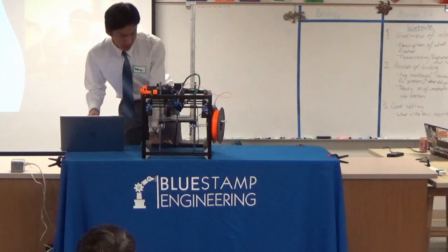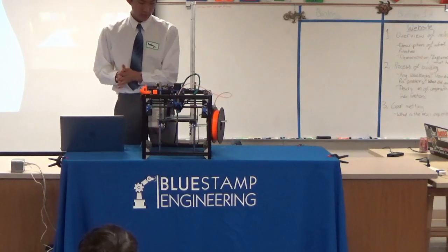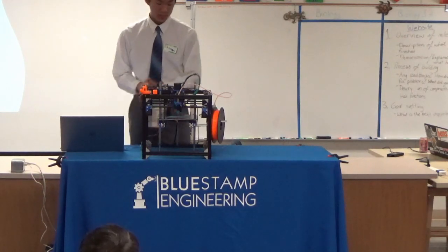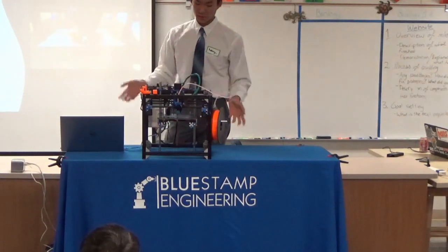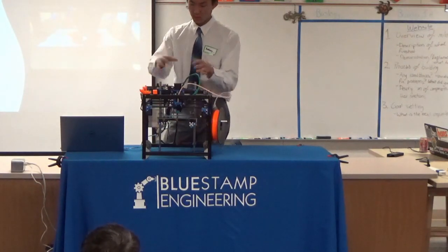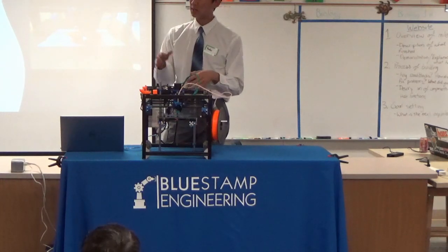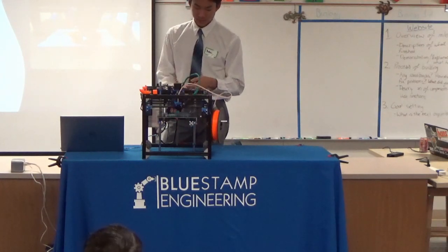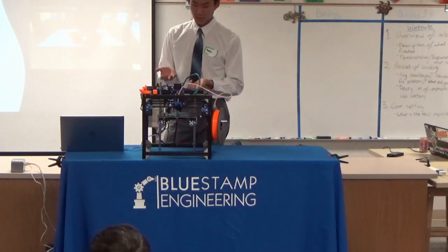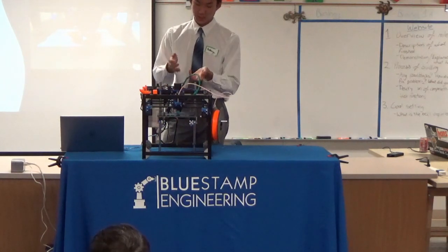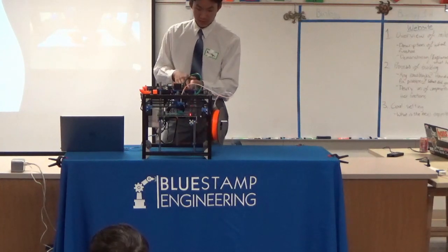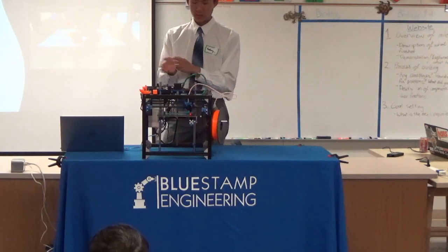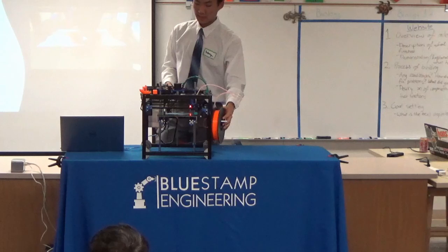For my demo I'll just start a print. The first thing it does is home the entire system so it knows where the hotend is and the internal coordinate system. Right now it homes the Z so it's flush against the nozzle, then it homes the X axis, and then it starts homing the Y axis.